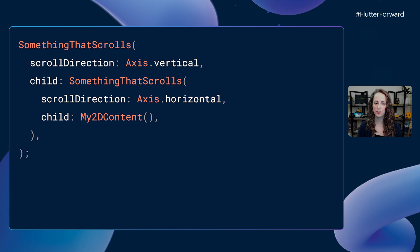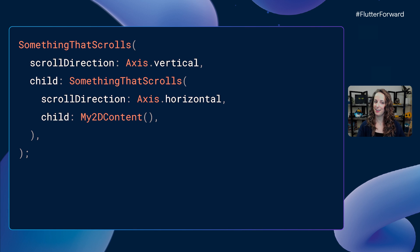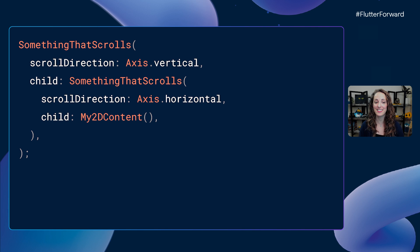Some of you may be thinking you already know how to scroll in two dimensions in Flutter. However, if you place something that scrolls horizontally inside of something that scrolls vertically, you can scroll in two dimensions. In some cases, this type of composition works really well, but more often it requires a lot of knowledge of the inner workings of scrolling in Flutter in order for it to work in all cases.